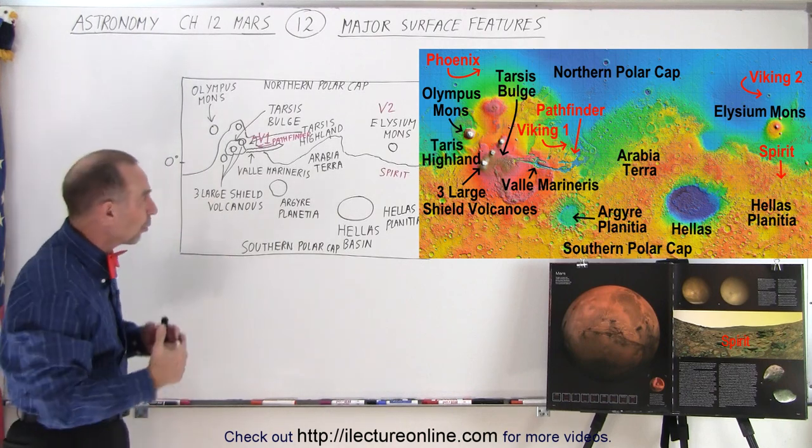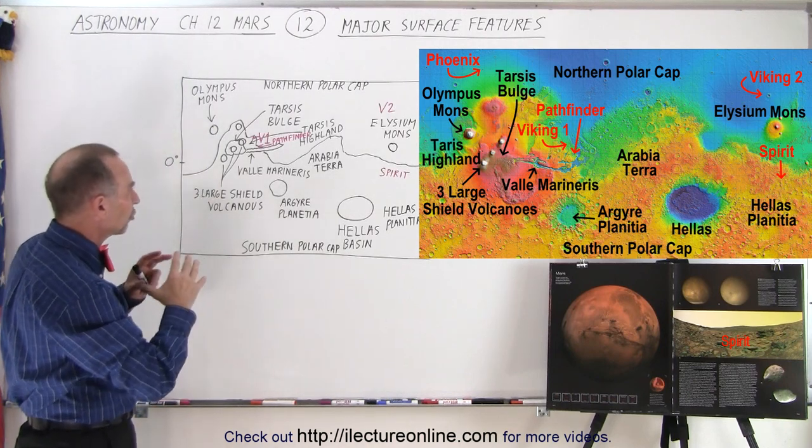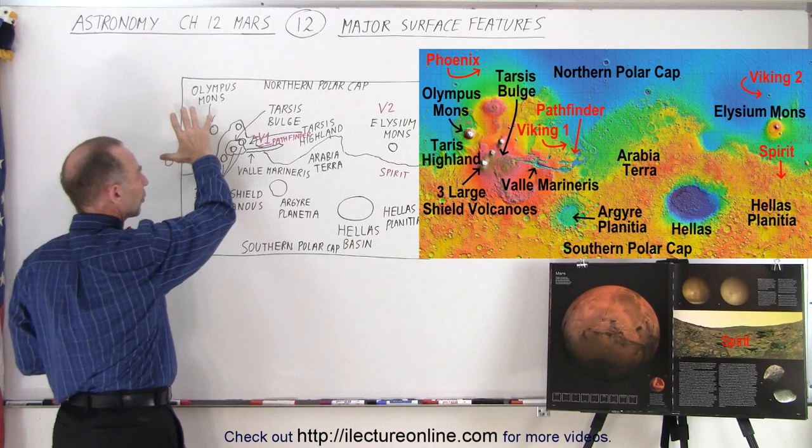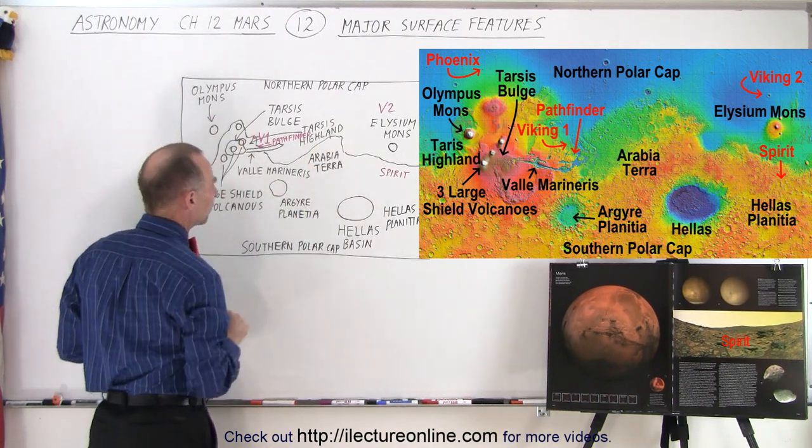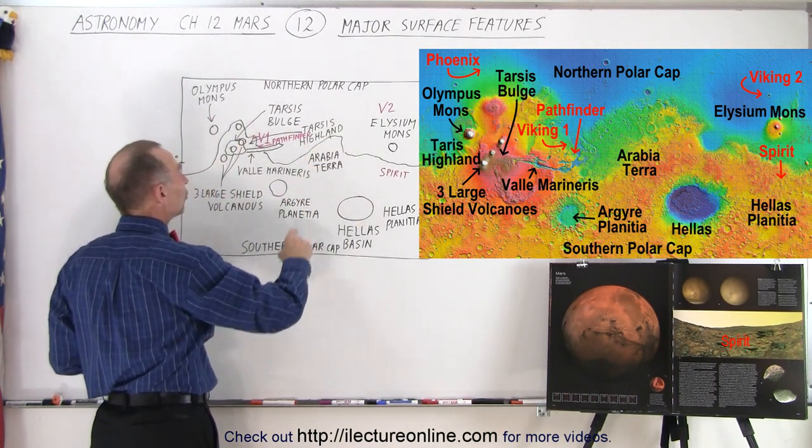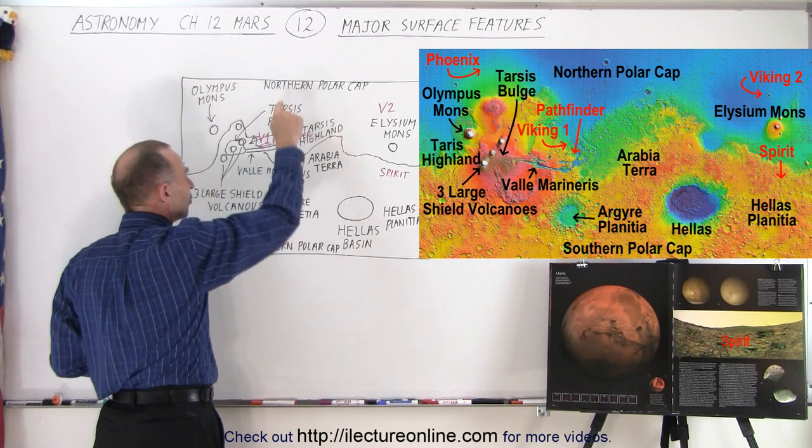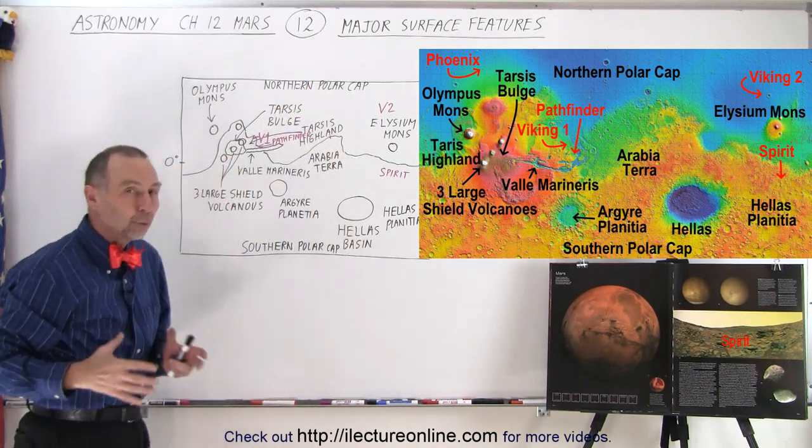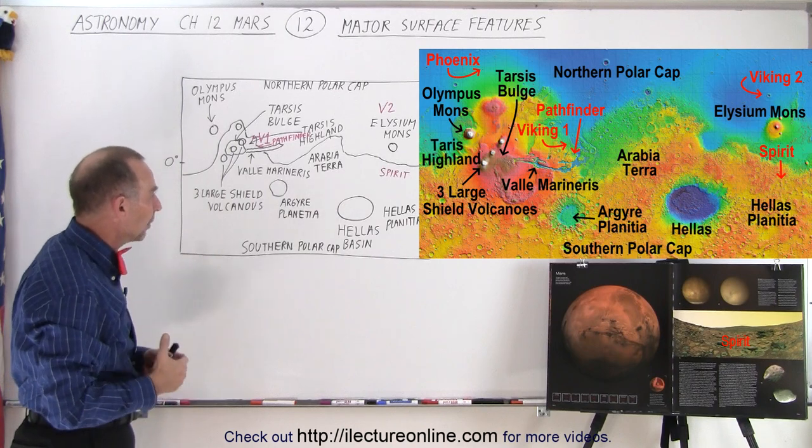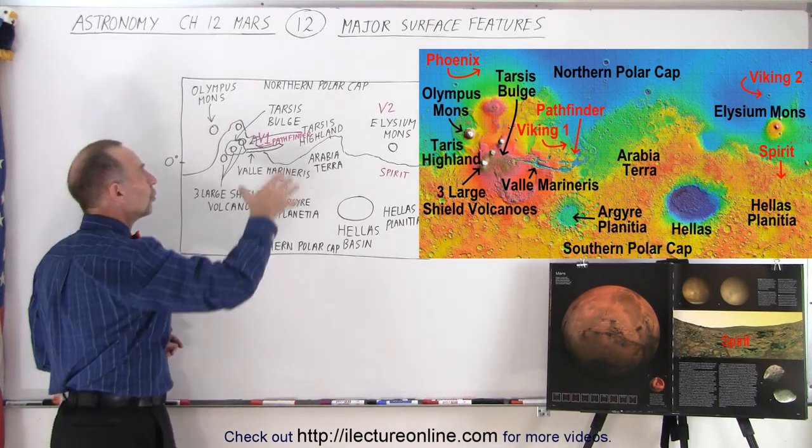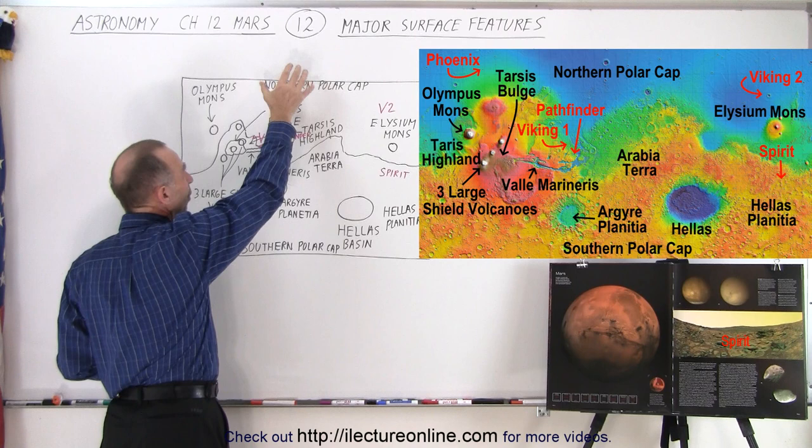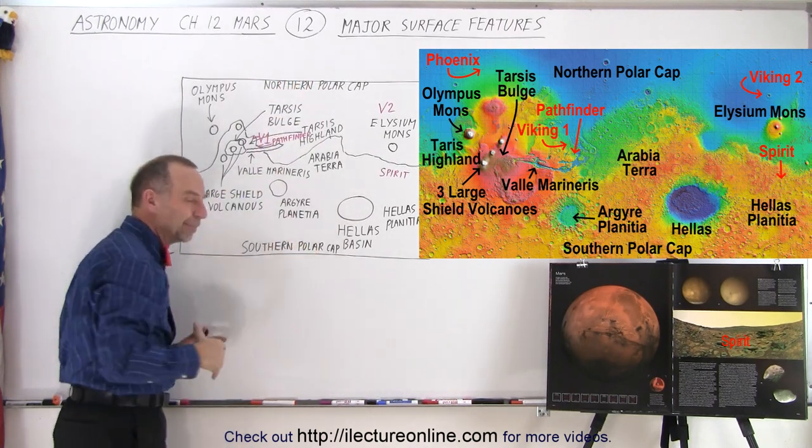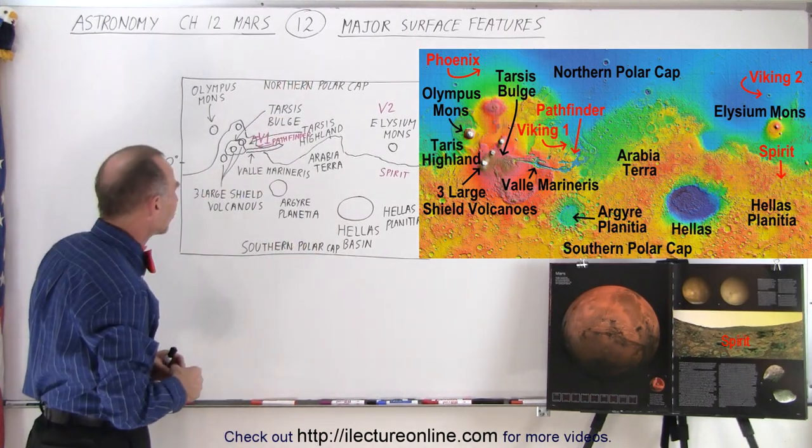There's different theories as to what may have happened as to why there's such a large difference between the northern region and the southern region. It does turn out that both the northern region and the southern region have a polar cap that contains both water ice and carbon dioxide ice. They believe that the northern polar cap contains more of the water ice than the southern cap, but that still needs to be decided for sure.